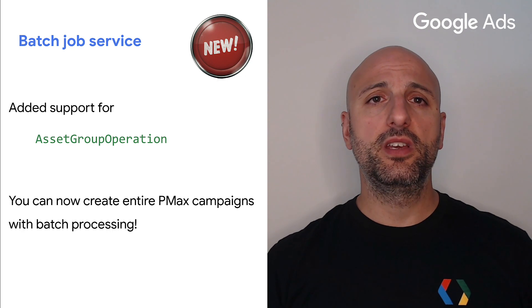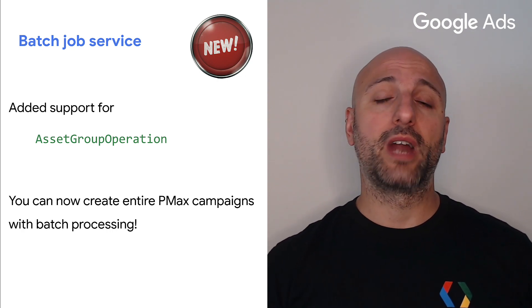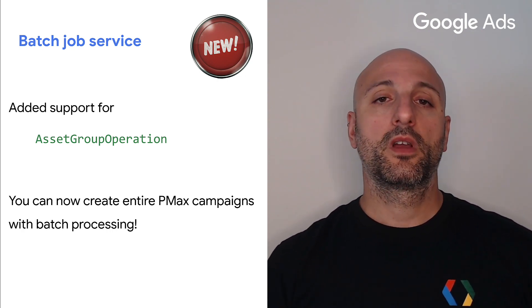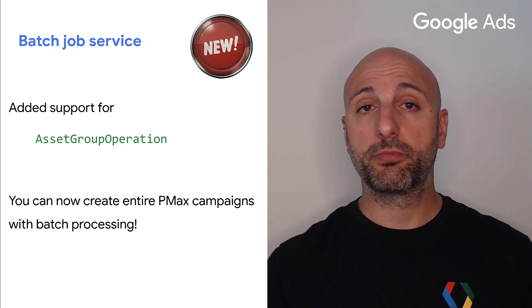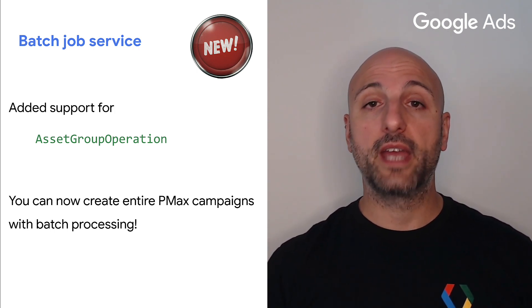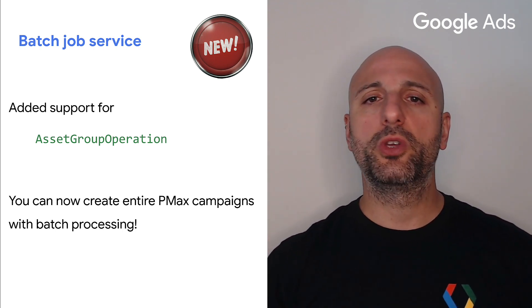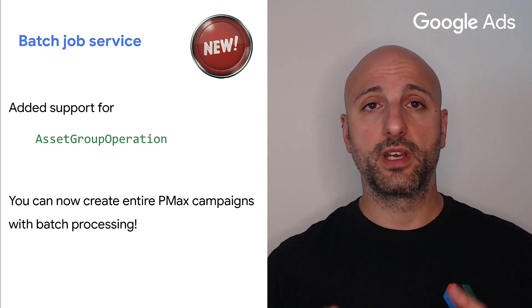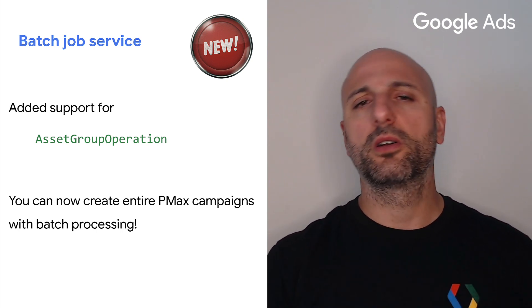Let's start with a change that affects how you can create Performance Max campaigns. Starting with version 17, the batch job service provides support for asset group operations. This was the only missing piece preventing you from using batch processing to create and manage entire Performance Max campaigns, so now you can bundle all the mutate operations you need into a single batch job.